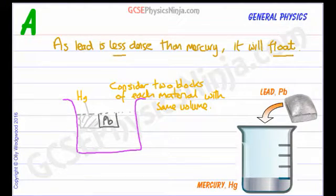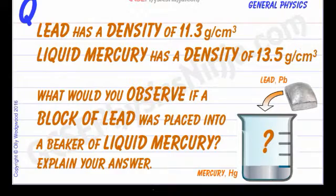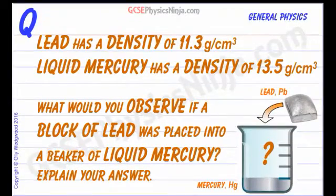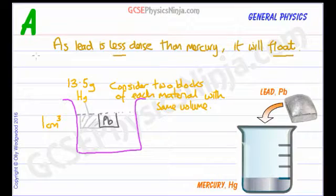Well, let's say that the volume is one centimeter cubed of each one. Because we know that mercury has a density of 13.5 grams for every centimeter cubed, we know that this will have 13.5 grams of mass. If these are both centimeter cubes, what about the lead? Well, the lead we said is less dense, so it only has 11.3 grams for every centimeter cubed. So lead would have 11.3 grams.